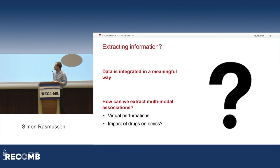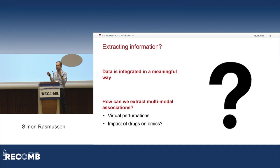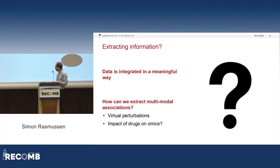Let's move on to the second part. The model can learn the data — meaning it learned all the rules about how features in one dataset influence features in another dataset. But how do we extract those rules? It comes down to: how can we extract these multimodal associations? And what we came up with was to use virtual perturbations.